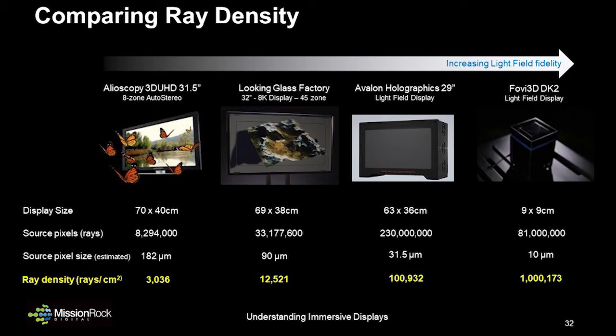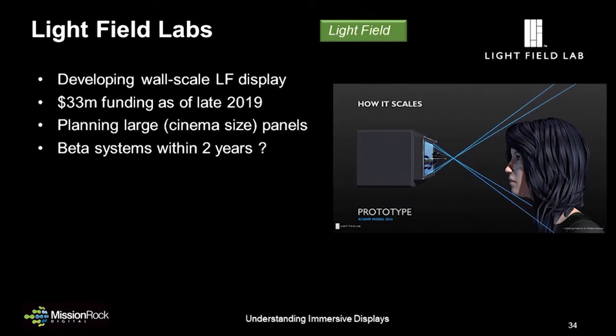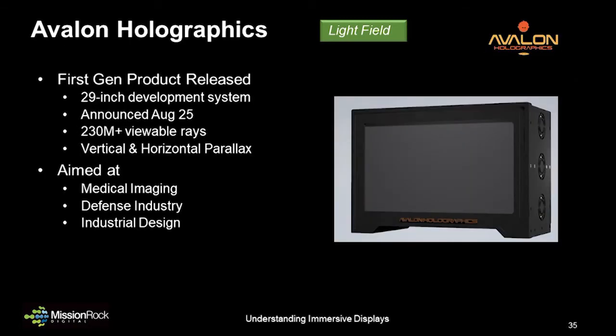Let's take a look at a few examples of light field displays now in the lab. Light Field Labs is a startup based in San Jose working on advanced technology for large-scale light field displays. They've announced plans for a wall-size and even cinema-size display based on small building blocks. Prototypes are being demonstrated privately now, with beta systems expected within 2021 or 2022. Avalon Holographics in Newfoundland, Canada recently unveiled their first-generation light field display — a 29-inch development system designed for applications in defense, medical imaging, and industrial design. The display is specified to emit over 230 million viewable rays, giving it a very high density.